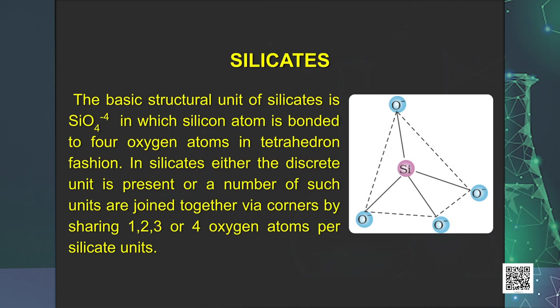Next silicon compound is silicates. A large number of silicate minerals exist in nature. Some of the examples are feldspar, zeolites, mica, and asbestos. The basic structural unit of silicates is SiO4 tetrahedron, in which silicon atom is bonded to four oxygen atoms in tetrahedral fashion. In silicates, either the discrete unit is present or a number of such units are joined together via corners by sharing one, two, three, or four oxygen atoms per silicate unit.